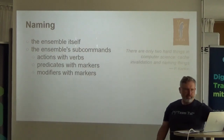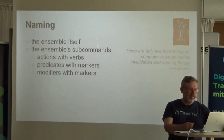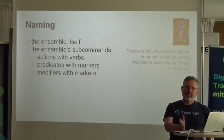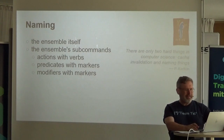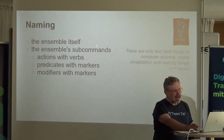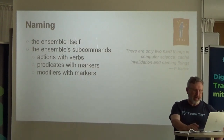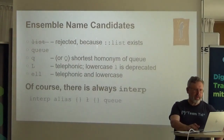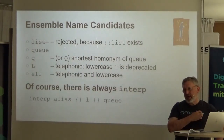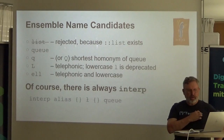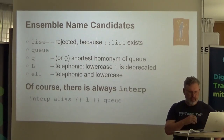On naming — naming the ensemble itself, I decided on Q. Unfortunately, 'list' was taken. And the convention is: actions with verbs, predicates with markers, modifiers with markers. Of course, you can have any name you want using interp alias.